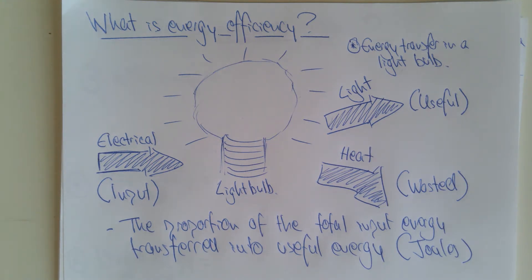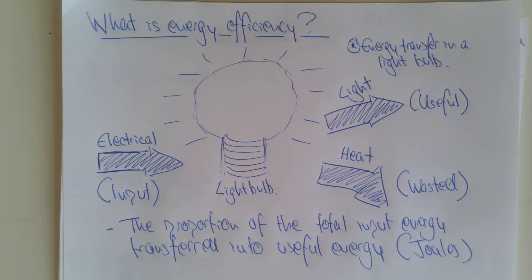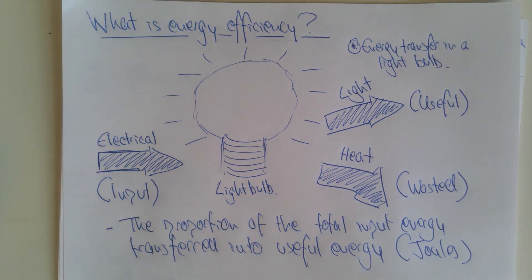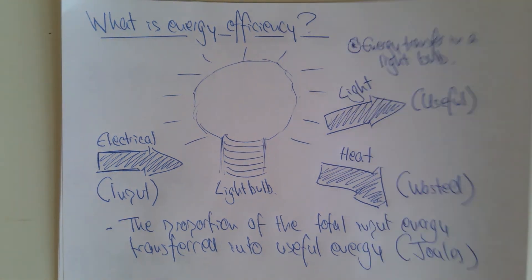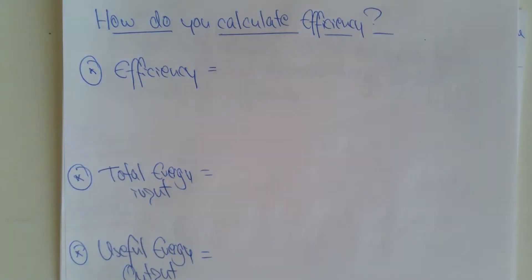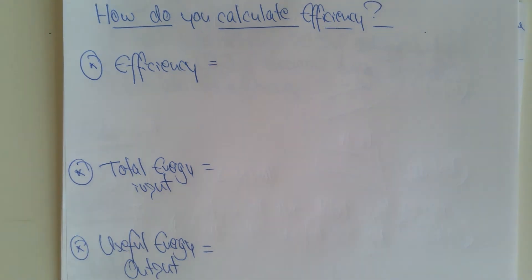The word 'proportion' here means the fraction of the total input energy that becomes useful energy. It's important to remember we have three types: input energy, useful energy, and wasted energy — all measured in joules. Efficiency tells us how much of the input comes out as useful.